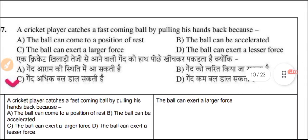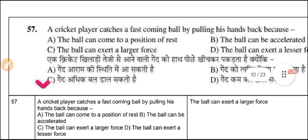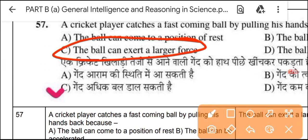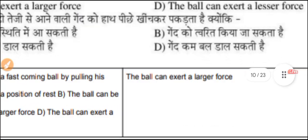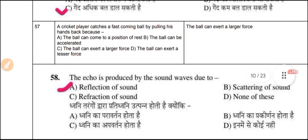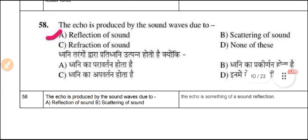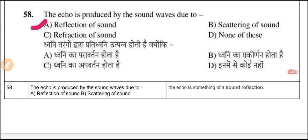Question 57: A cricket player catches a fast-coming ball by pulling his hand back because the ball can exert a larger force. The answer is option three — by pulling the hand back, the ball exerts a larger force over a longer time, reducing impact.